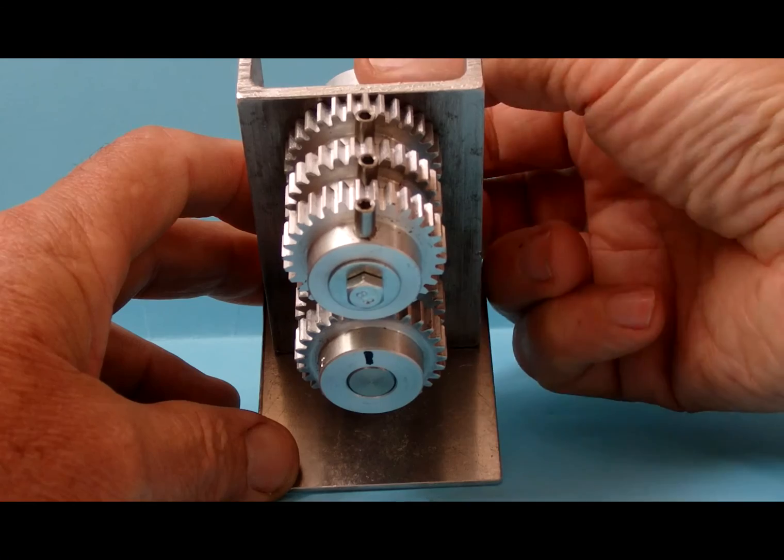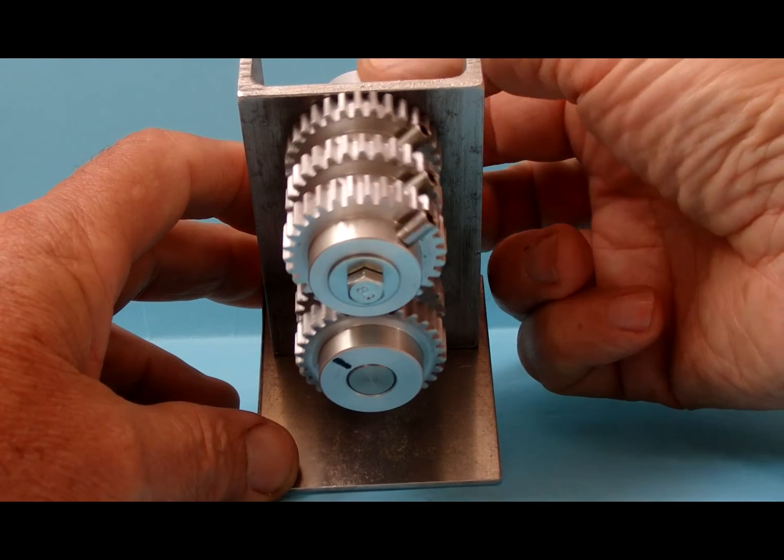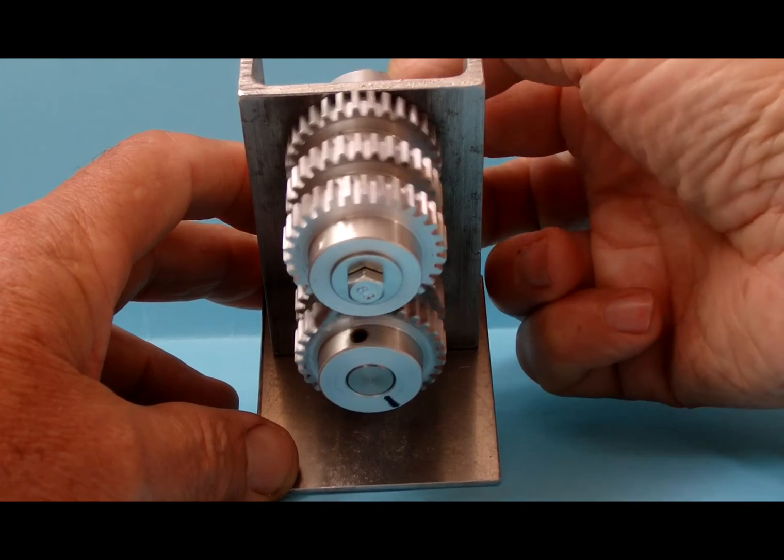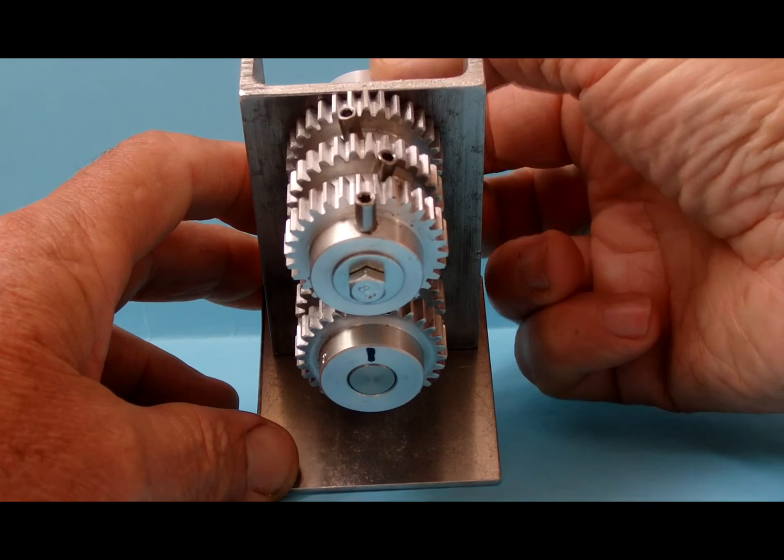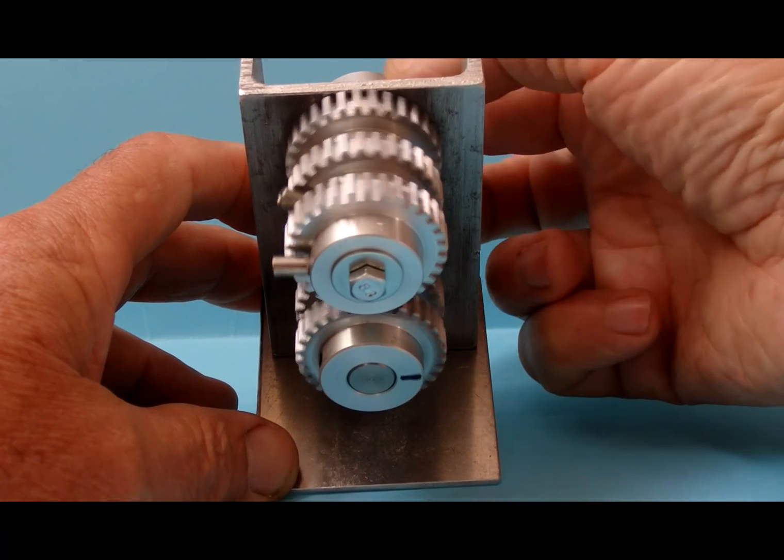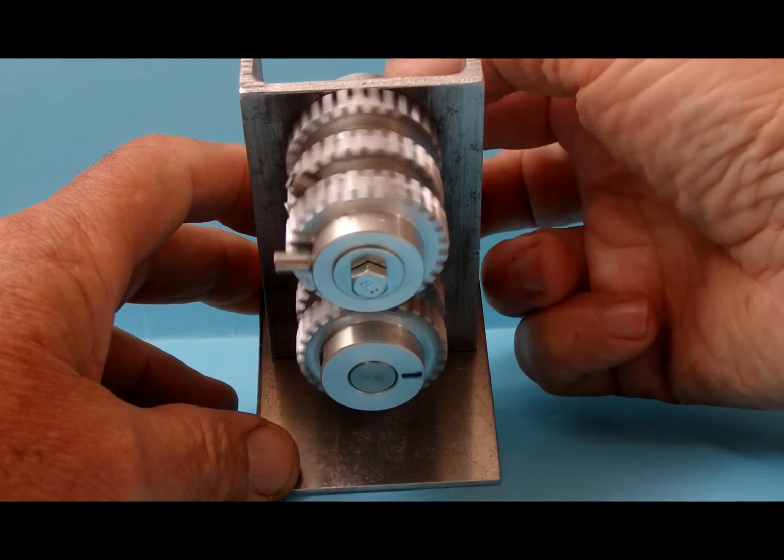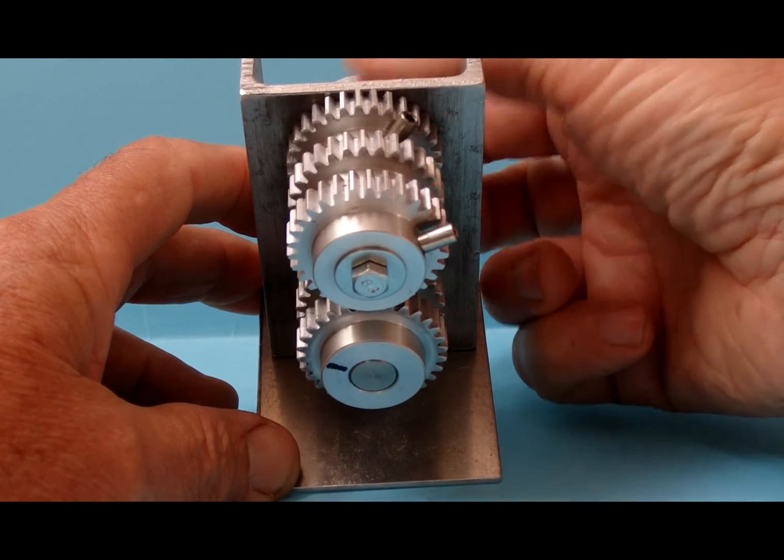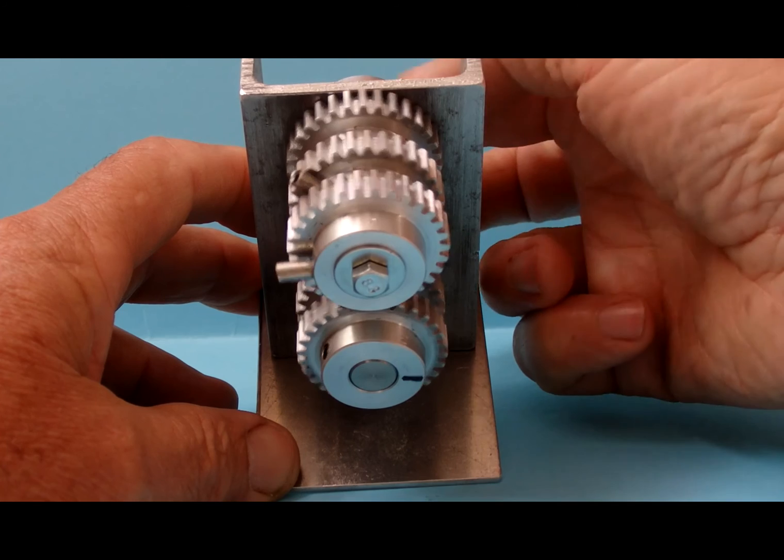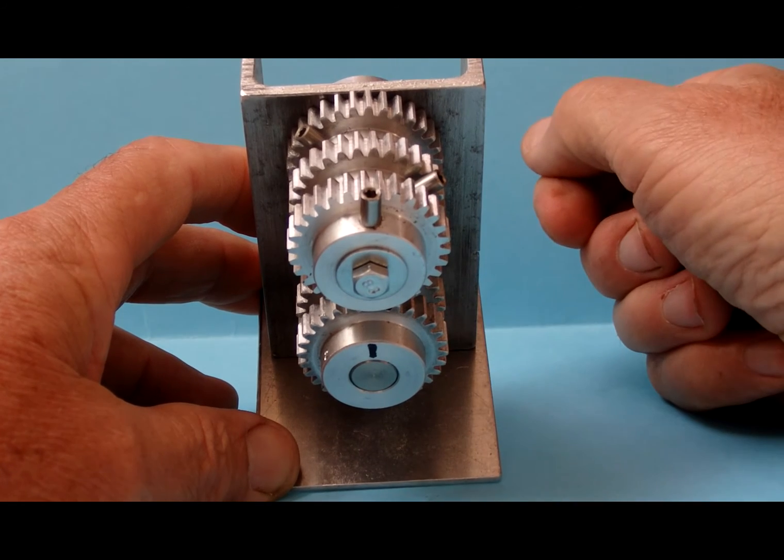Now see what happens if one turn is given to the driving shaft. It can be seen that the first index is still in its starting position while the others have moved on either side. Every more turn of the driving shaft will increase the two last indexes movement. Hence the paradox.